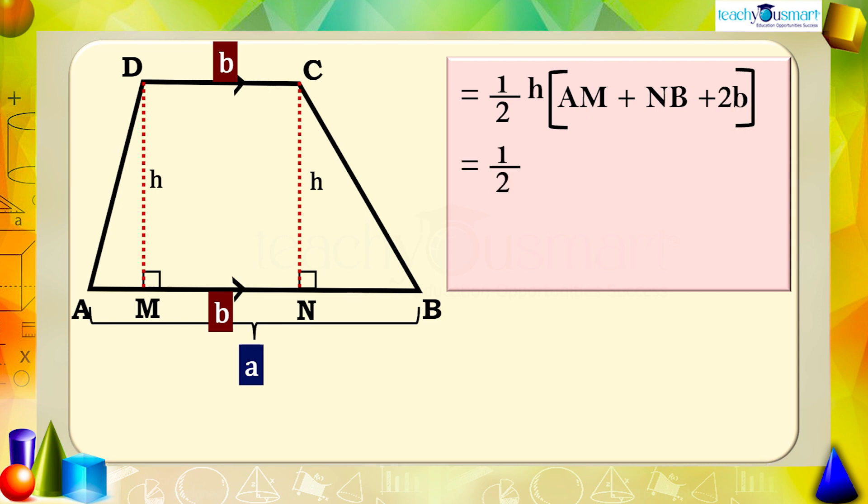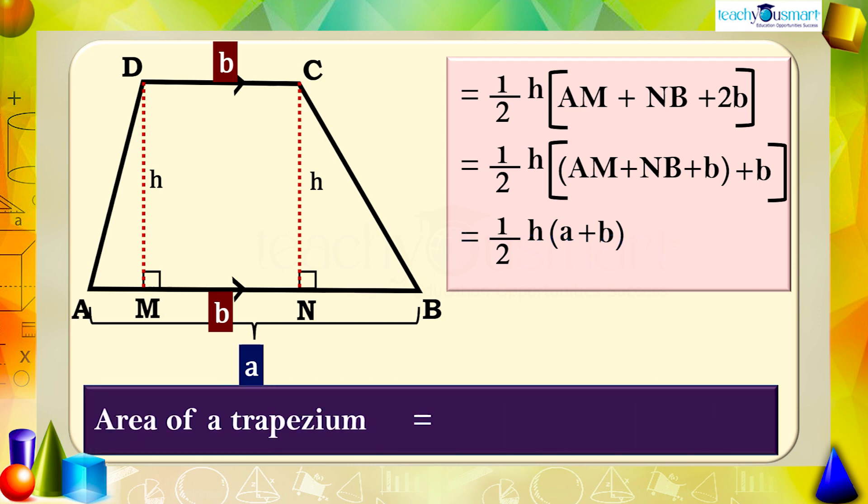That is, half h multiplied by AM plus NB plus b plus b, which is equal to half h multiplied by a plus b. That is, the area of a trapezium equals half h multiplied by a plus b.